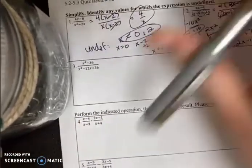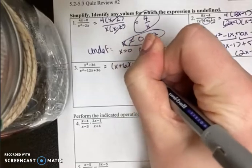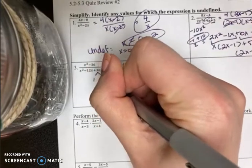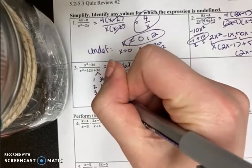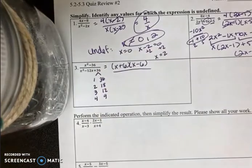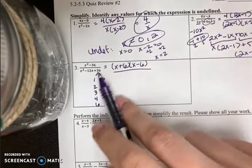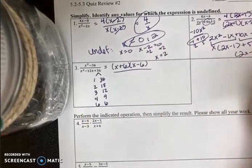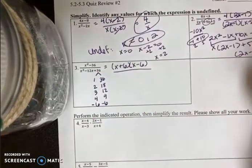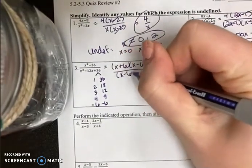Number 3. The numerator is a difference of 2 squares, so x plus 6, x minus 6. The denominator is a case 1 trinomial, which means I can list out the factors. 1 and 36, 2 and 18, 3 and 12, and 4 and 9. I almost forgot, how silly, 6 and 6. Now, I need to see, okay, well, using same signs, what can get me to that negative 12? Well, that would be negative 6, negative 6. Meaning, the factored form is x minus 6, x minus 6.